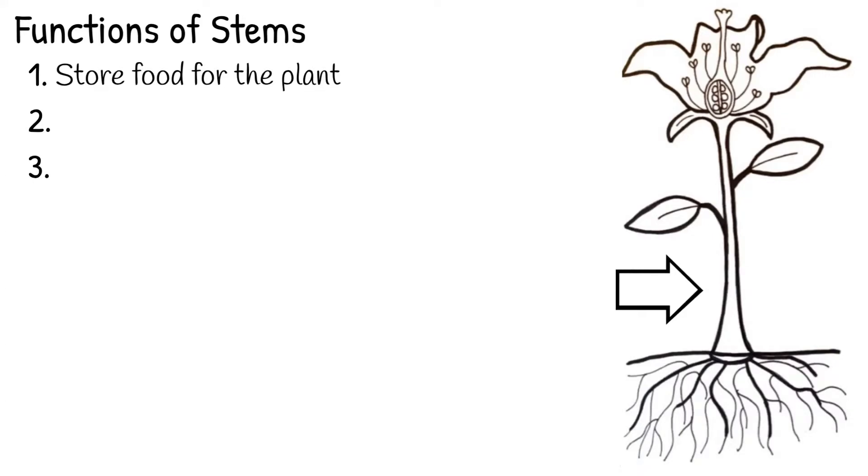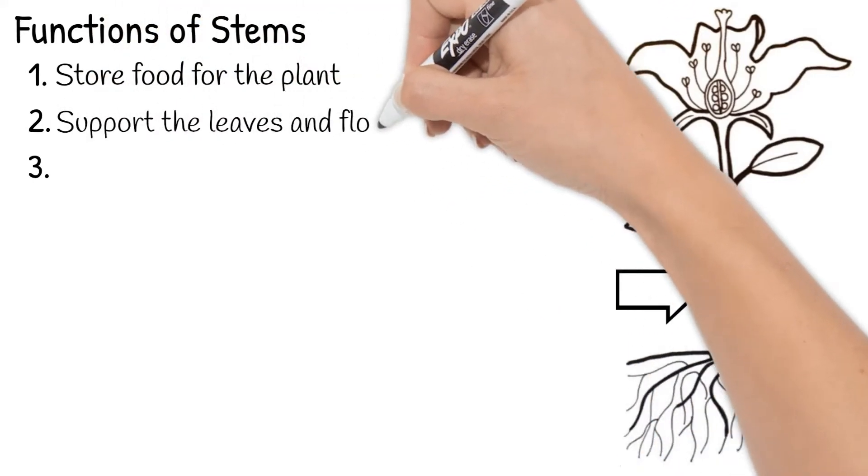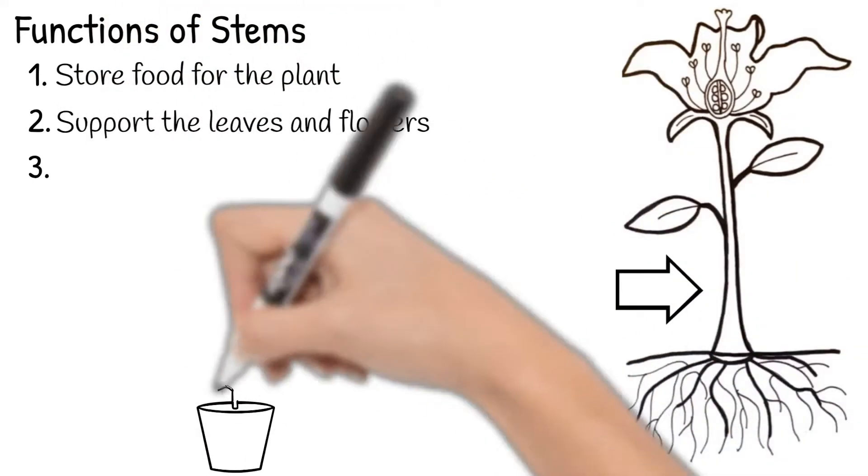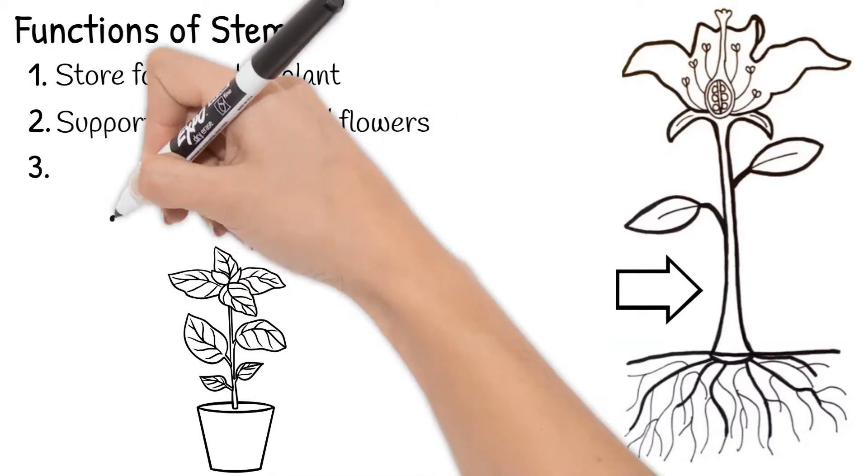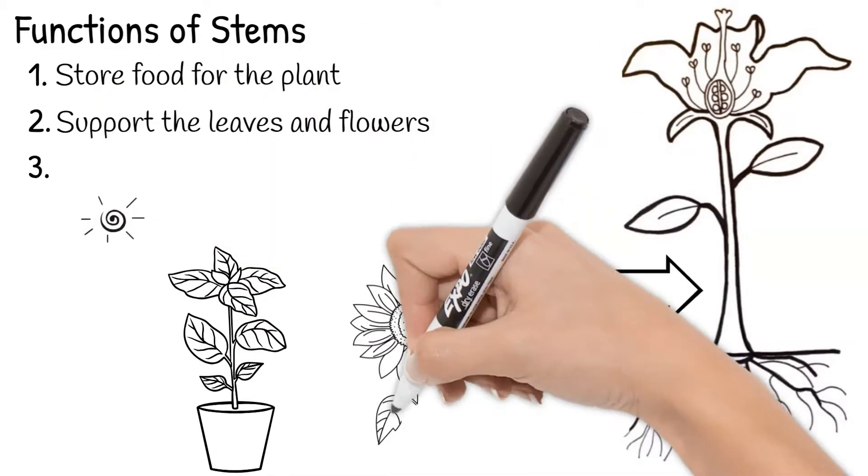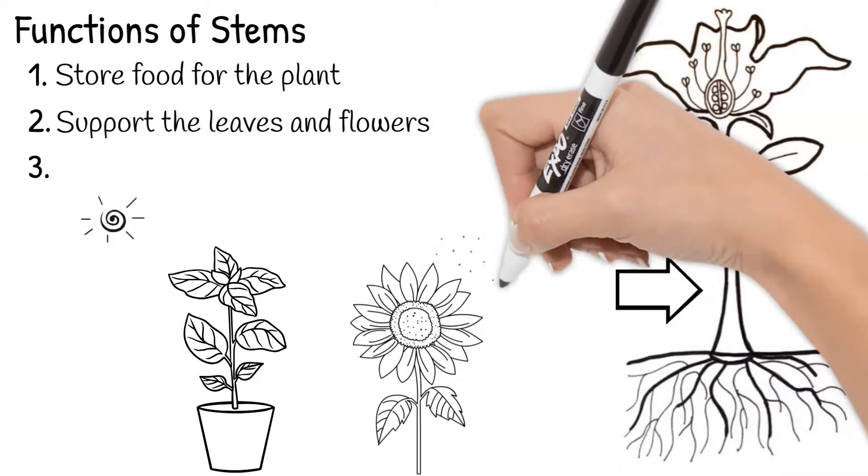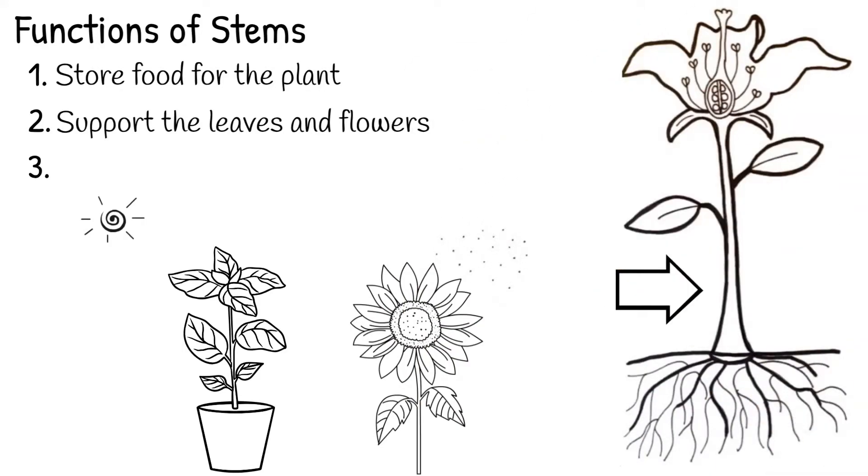Stems help support the leaves and flowers of the plant. Holding up the leaves helps them to absorb sunlight, and holding up the flowers helps them to better spread and receive pollen.